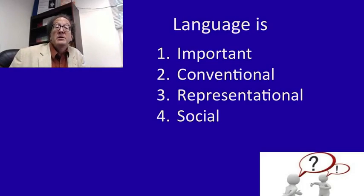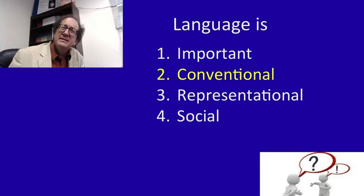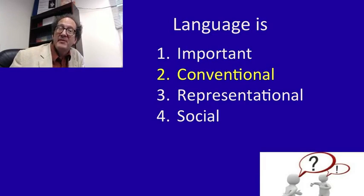Overall, then, language is important and it's conventional in ways that might seem arbitrary, but actually limited in important ways by the fact that language is also representational and social. But it's kind of cheap to say language is conventional — which are the conventions? Which are the rules that language follows? This is actually extremely complex because language follows rules or conventions at many different levels.